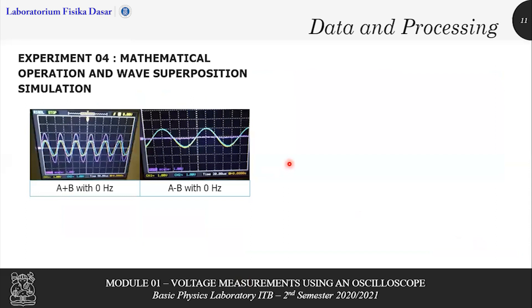And in the last experiment, you will be given a picture and you need to determine which one is the addition of two waves and which one is the subtraction of two waves. As you can see, this picture represents the A plus B or the addition from two waves, and this picture represents the subtraction of two waves or A minus B. In these two pictures, the frequency is zero hertz.